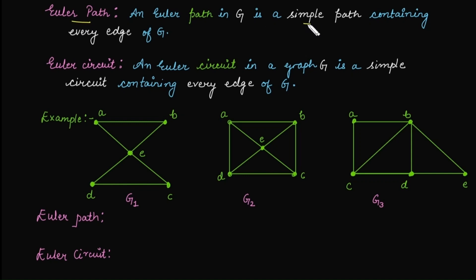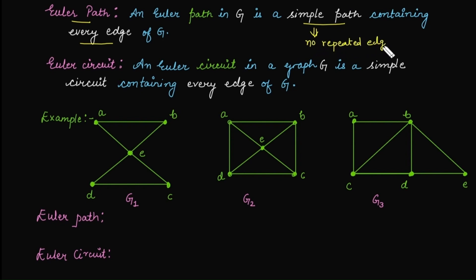An Euler path is a simple path that contains every edge of the graph G. A simple path means we need to find a path with no repetition of edges. If you find a path that contains every edge exactly once, then that path is called an Euler path.